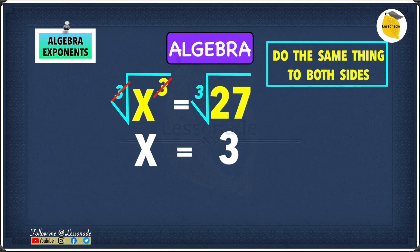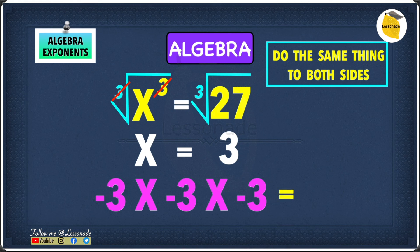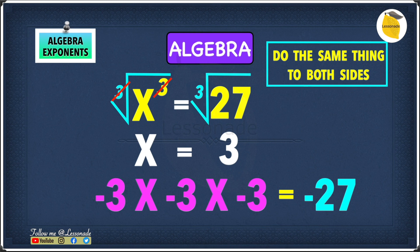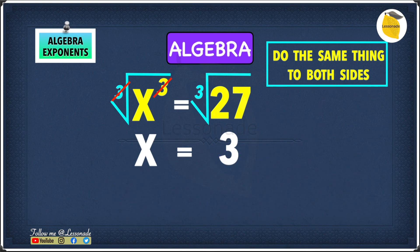Let's check: if x equals minus 3, then minus 3 cubed is minus 3 times minus 3 times minus 3. Minus 3 times minus 3 gives 9, and 9 times minus 3 gives minus 27. But minus 27 and 27 are not the same, so minus 3 does not work. The key rule to remember is that whenever you have an odd root — like a cube root — you only get one answer and it will not be negative. So our answer is x equals 3.